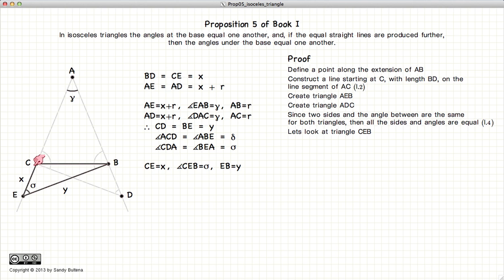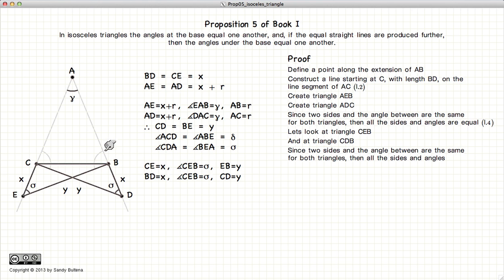Now let's look at the triangles CEB. It has a side X and a side Y, with an angle sigma between the two. Similarly, CBD has a side X, a side Y, and an angle sigma between the two. And again, according to Proposition 4, that means the two triangles are equivalent in all respects, including the angles.